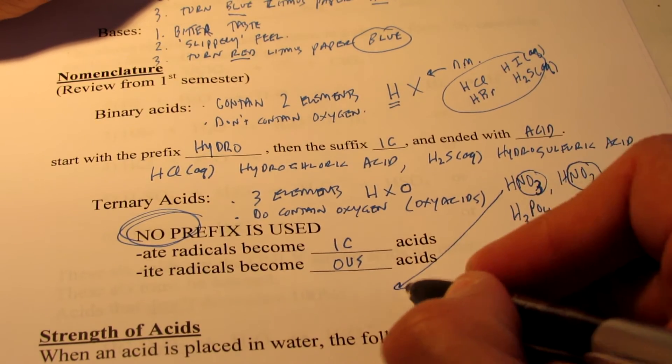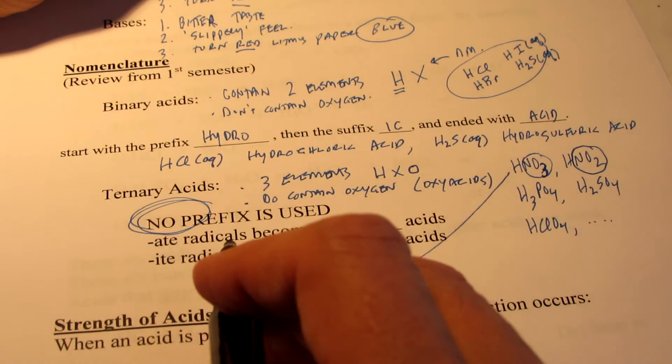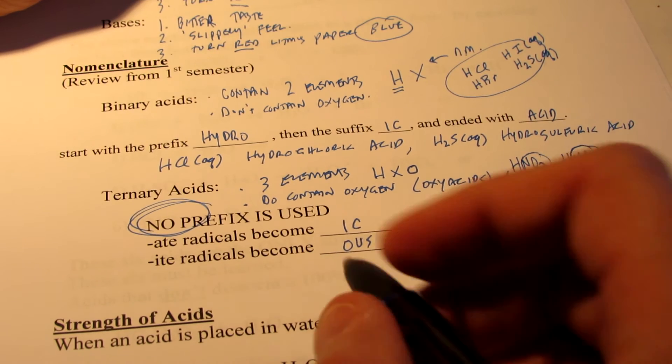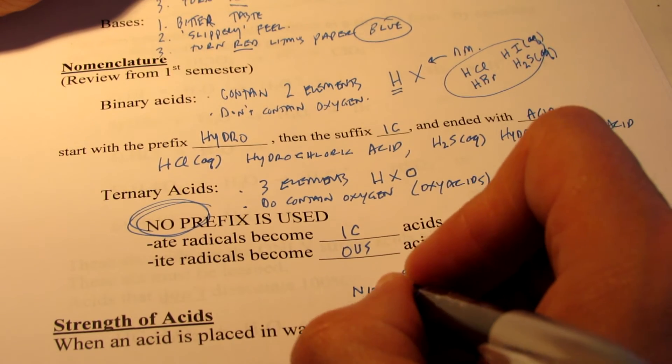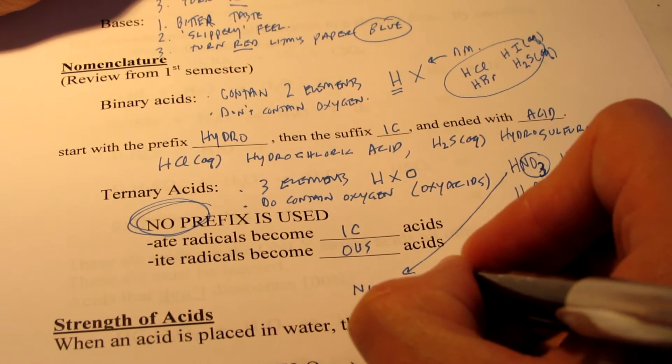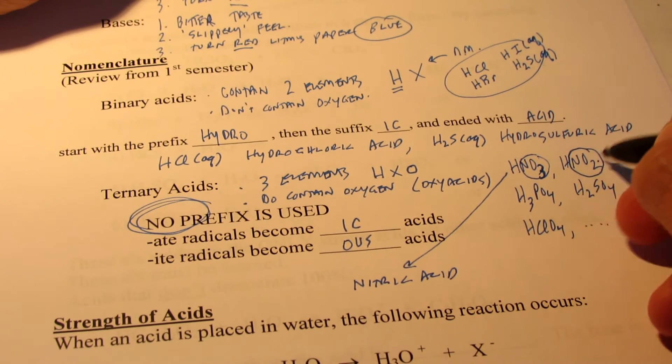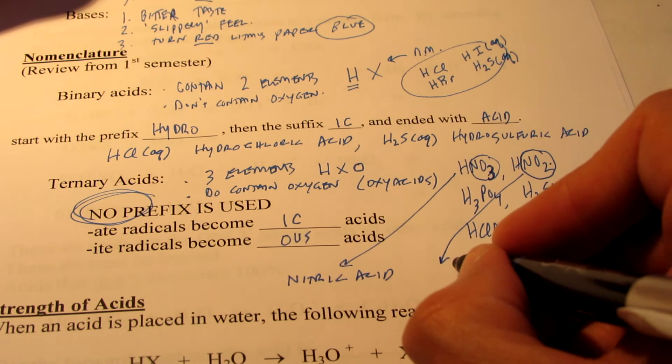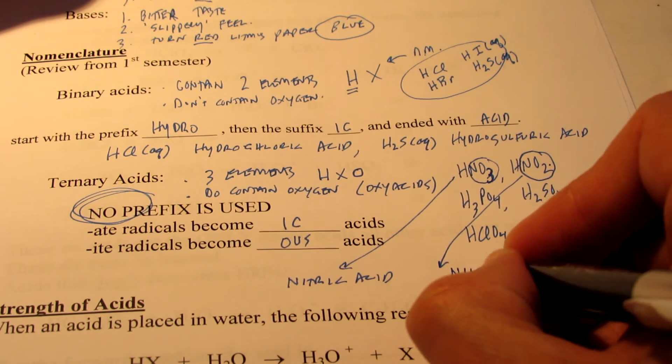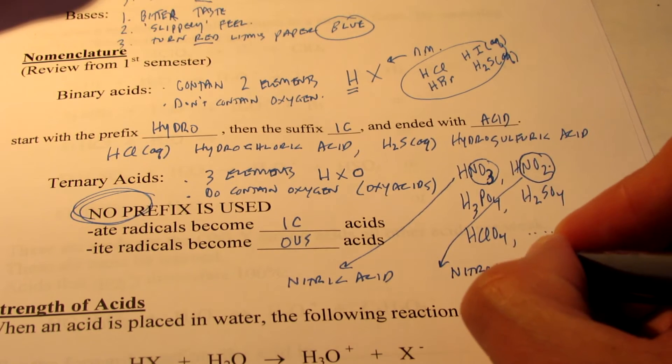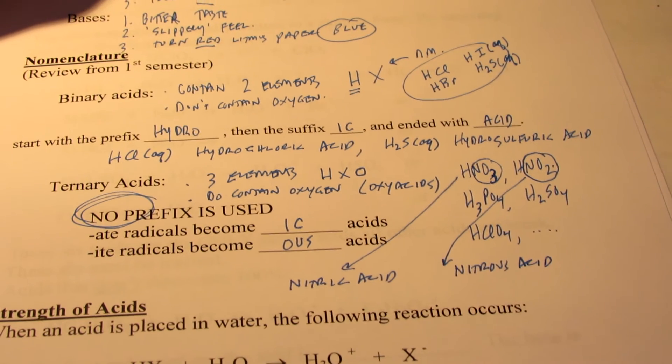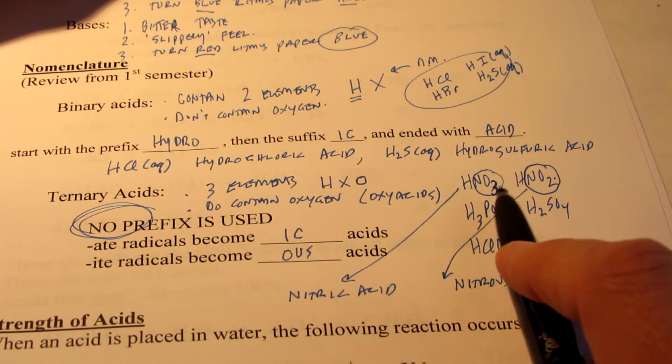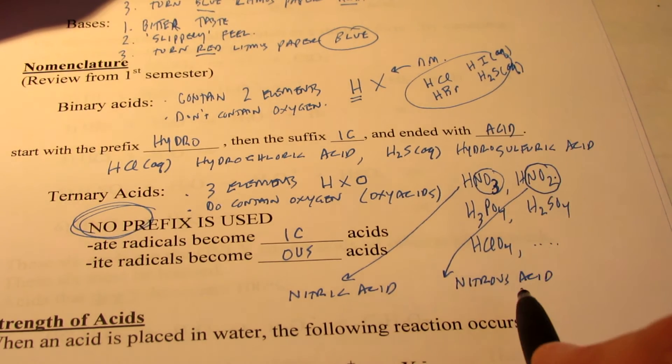Let me quickly do HNO3 for you. The radical becomes -ic, so instead of nitrate, we would say nitric acid. And HNO2, we could do as well. NO2 is nitrite, so -ites become -ouses. So this is called nitrous acid. So we have nitric, HNO3, and HNO2 is nitrous.